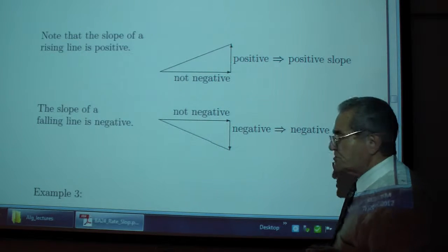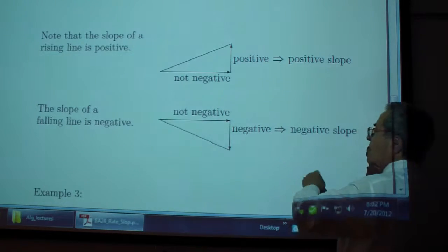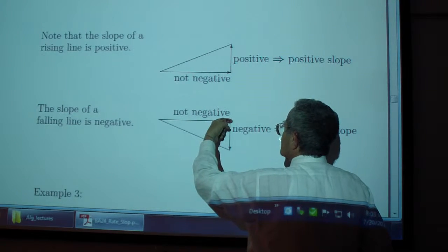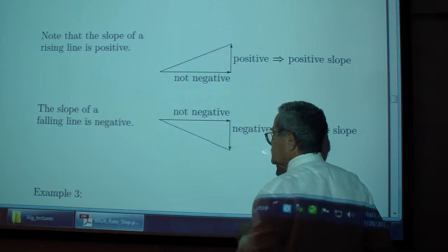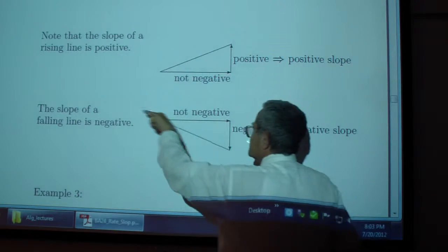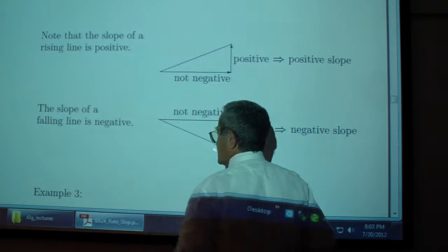Note that the slope of a falling line is negative because we have a positive change in x and a negative change in y, or ultimately, a negative change in x and a positive change in y.